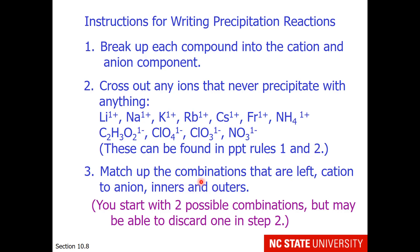Then we can match up the combinations that are left, cation to anion, or innies, which are positions 2 and 3, and outies, which are positions 1 and 4. We'll start with two possible combinations, but we may get rid of one of them by our actions in step 2.